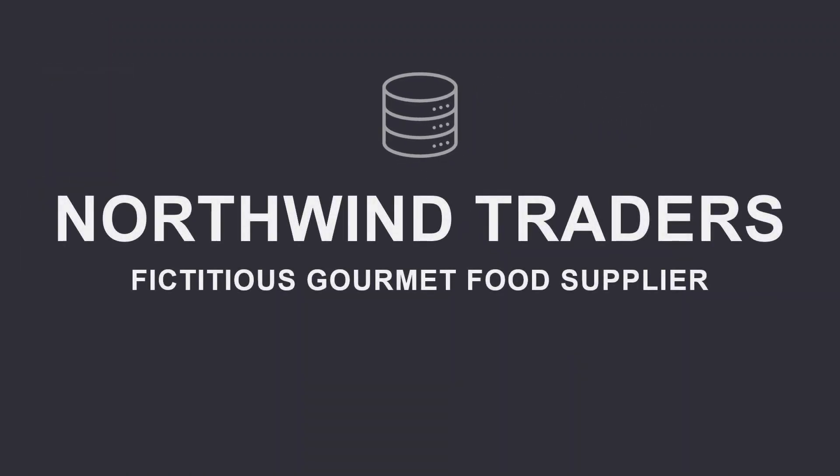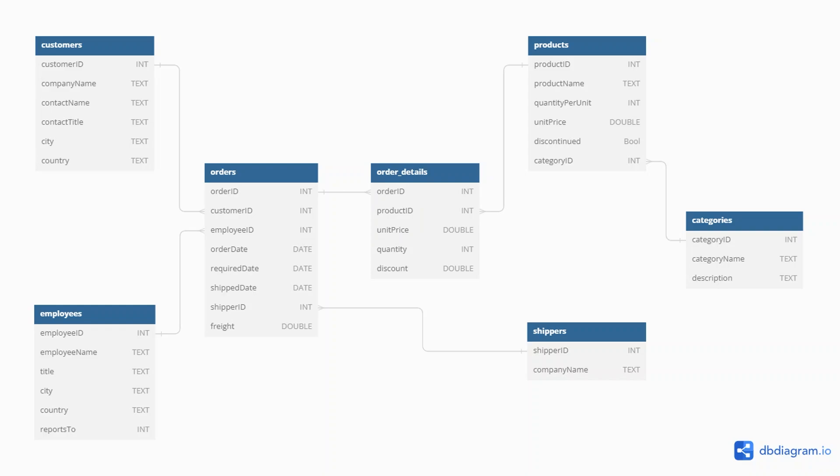In this video, we're going to use a comprehensive database called Northwind Traders. This encompasses sales and order data for a fictitious gourmet food supplier, including information on customers, products, orders, shippers, and employees. An entity relationship diagram provides a visual representation of the structure of our database. Each table is represented by a box, showcasing the relationships between these tables through lines and connectors.